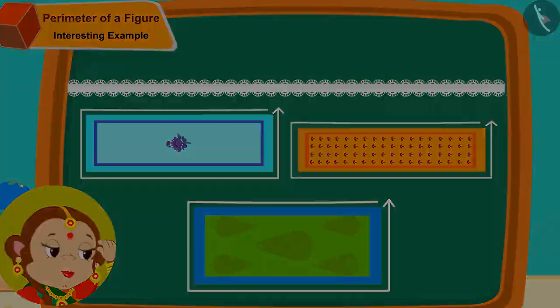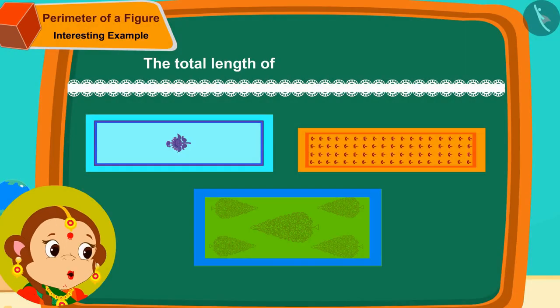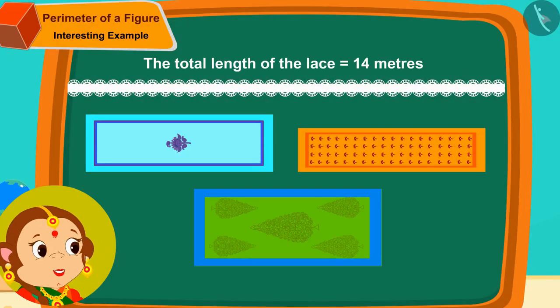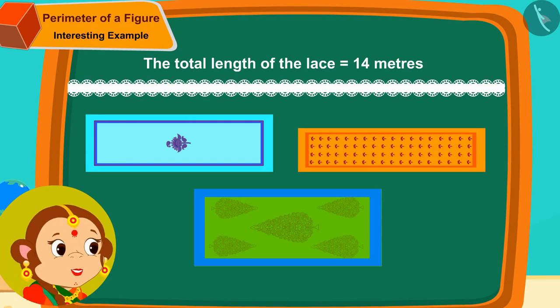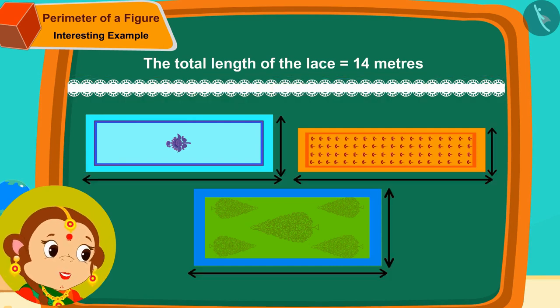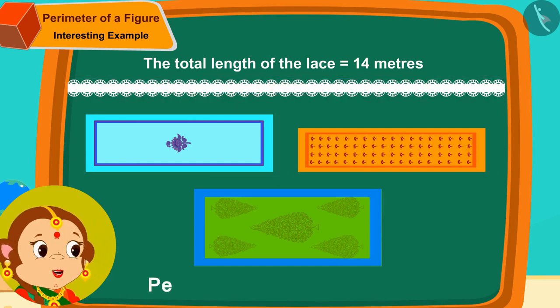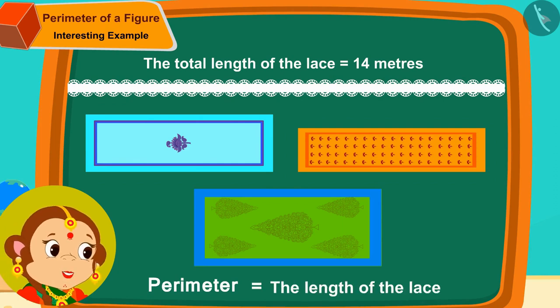Banno thought, the total length of this lace is 14 meters. And if I want to apply this lace on all sides of the sheet, then the perimeter of the sheet will be equal to the length of the lace required.